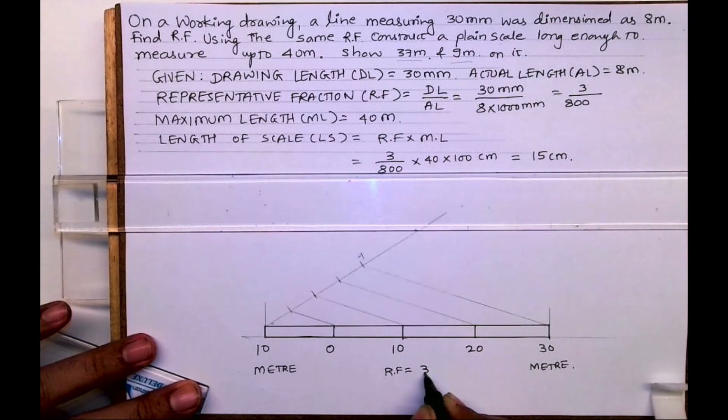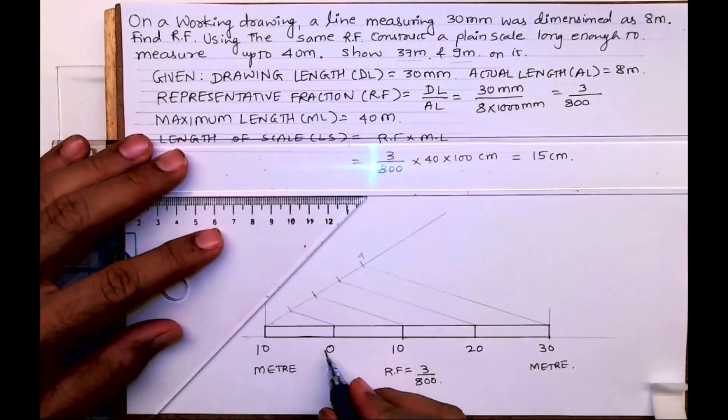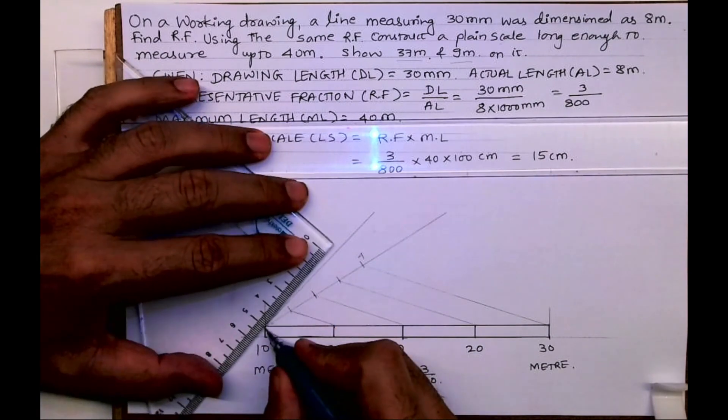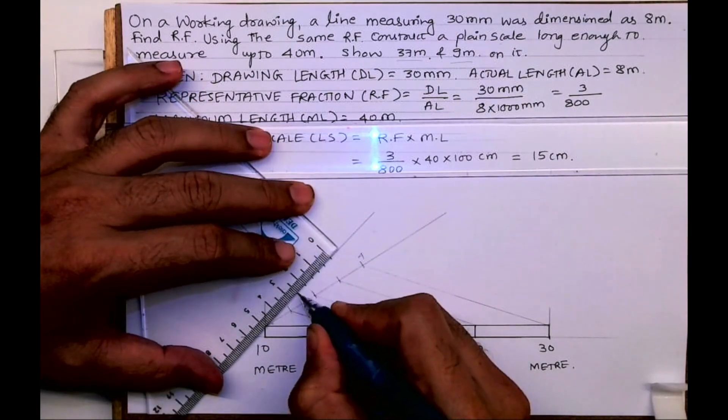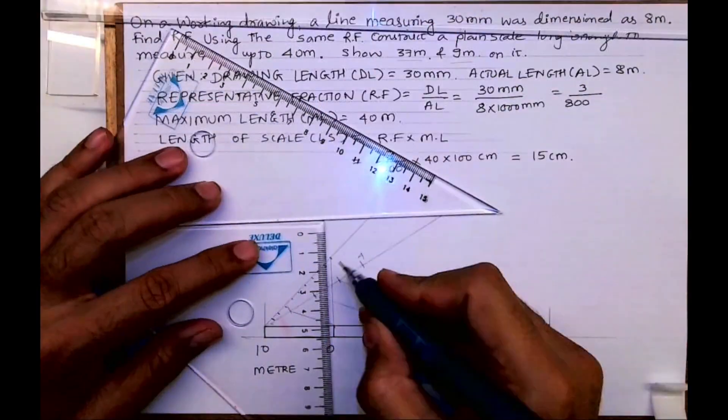We write RF 3 upon 800. So all this writing is very important. Now we'll divide the first block into 10 parts. In exam they give marks for writing meter, decimeter over here.